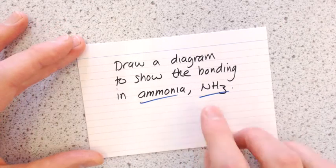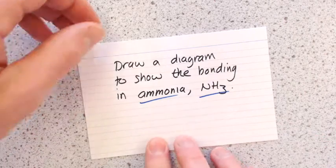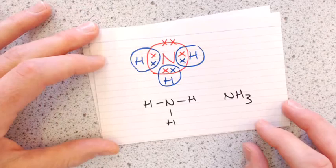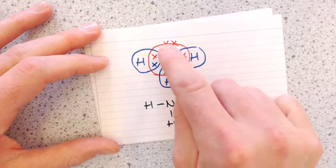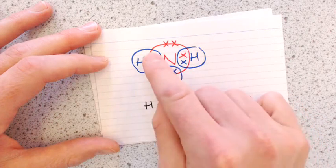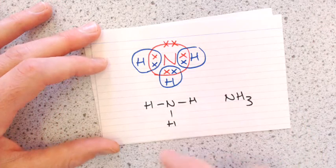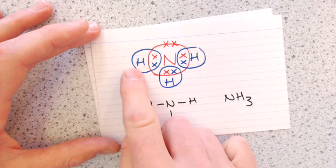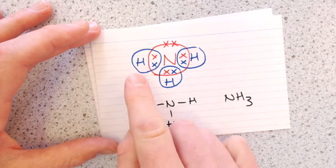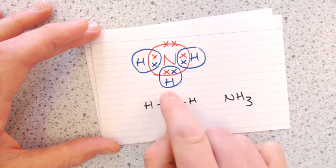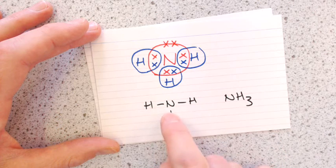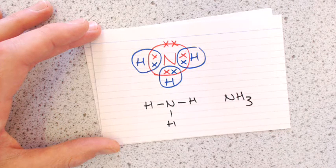Ammonia, NH₃: two non-metals, so covalent bonding. Nitrogen has five electrons in its outer shell, so it needs three more to get a full outer shell — meaning it forms three covalent bonds. One bond with each of three hydrogens. You write that with three single bonds off the nitrogen, or as NH₃.